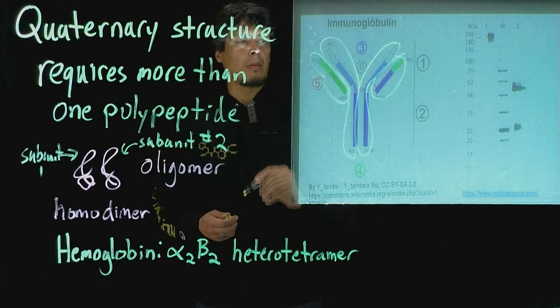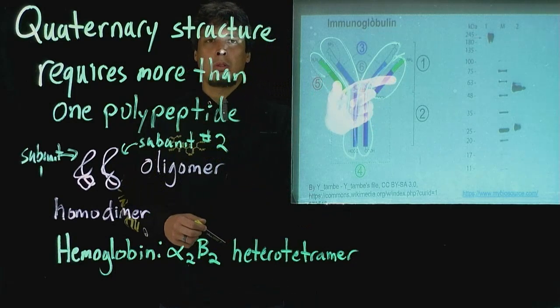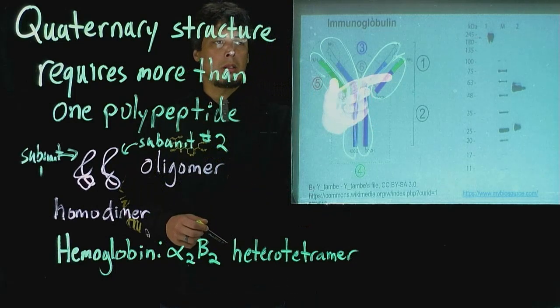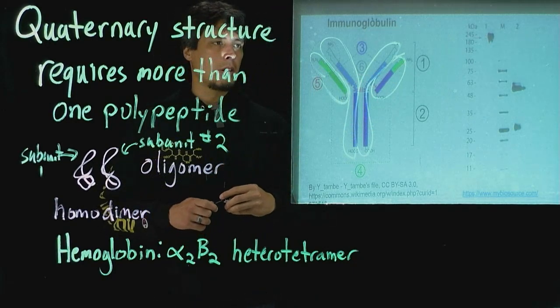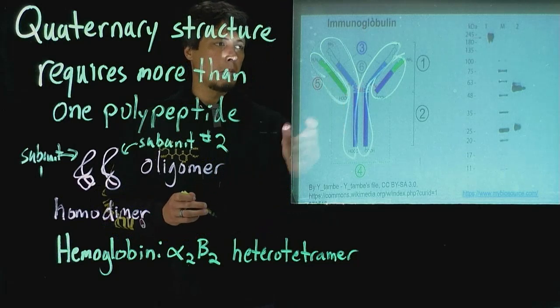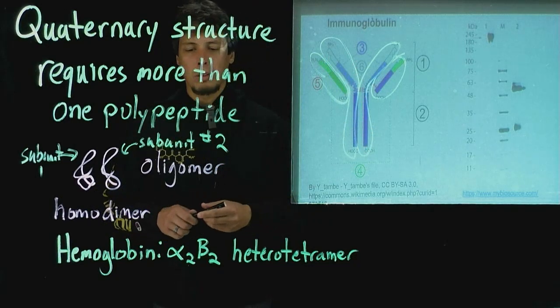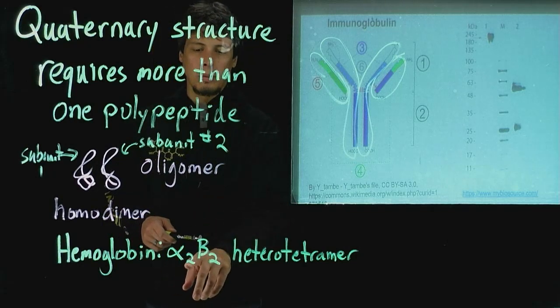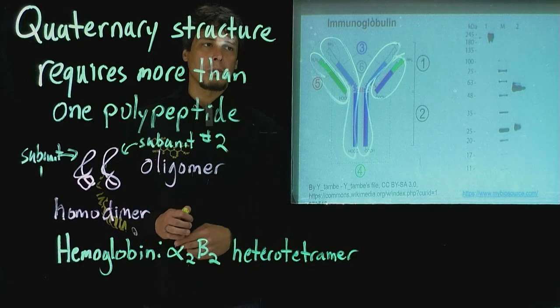We've got four. Two of the shorter subunits are identical, or have the same amino acid sequence, and the two longer have the same amino acid sequence. So just like hemoglobin, we can refer to this as an alpha 2 beta 2 heterotetramer.